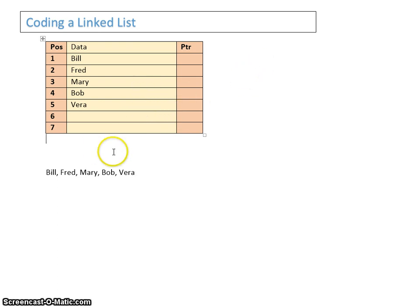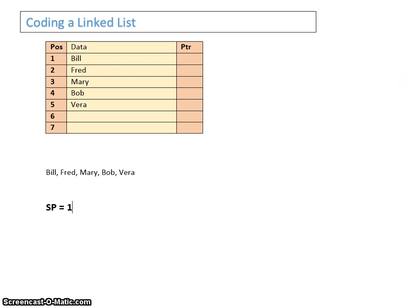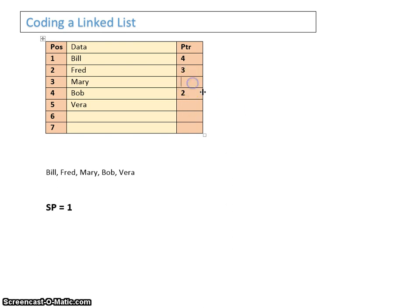We need to set the pointer system up. With a linked list, we have a start pointer. We're going to set the start pointer to the first item alphabetically, which is Bill in position 1. So the start pointer equals 1. Bill's pointer gives the address of the next location alphabetically — Bob. Bob's pointer holds Fred's address, Fred's holds Mary's, Mary's holds Vera's, and Vera has a null pointer. That is our linked list set up.